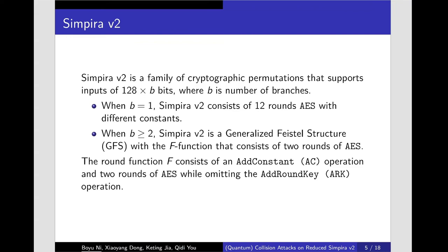When b >= 2, Simpira v2 is a generalized Feistel structure with a round function F that consists of two rounds of AES. We denote Simpira v2 family numbers with b branches as Simpira-2b.